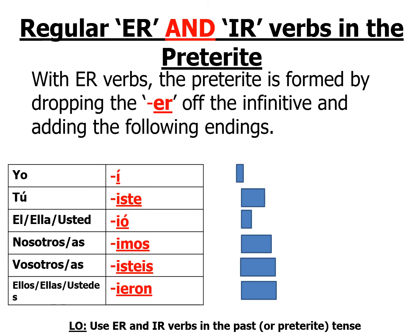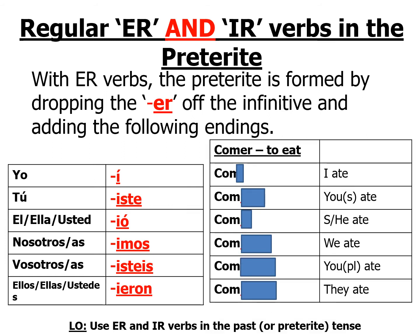What does this look like with an example verb? Here is my example verb: the verb comer, to eat. I take away the ER from my infinitive, and that leaves me with a stem — COM. To that I add my preterite endings. So: I ate, comí; you singular ate, comiste; she or he ate, comió; we ate, comimos; you plural ate, comisteis; and they ate, comieron.